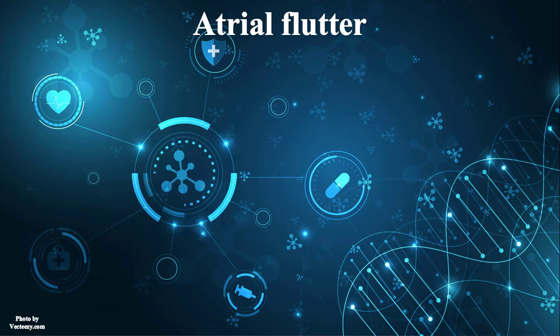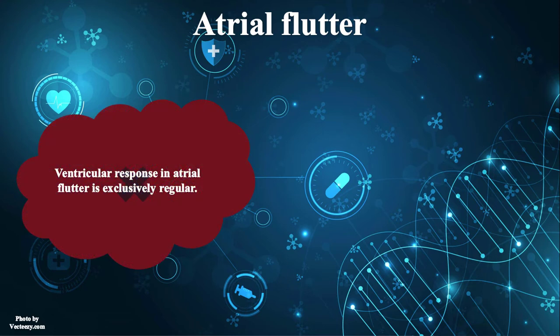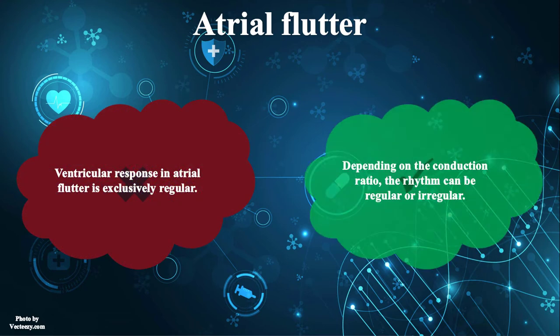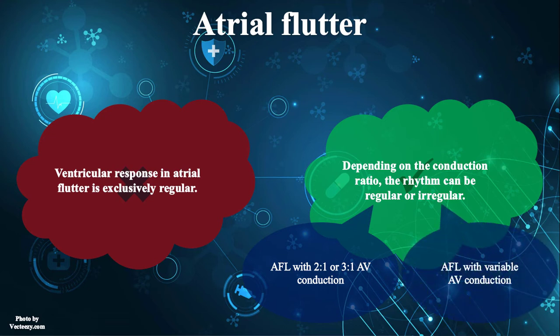There is a common misunderstanding about the ventricular response in atrial flutter. Many think that ventricular response in atrial flutter is exclusively regular, but that's not true. Depending on the conduction ratio, the rhythm can be regular or irregular. Atrial flutter with a fixed conduction ratio like 2-to-1, 3-to-1, and 4-to-1 is regular, but variable AV conduction results in irregular rhythms.